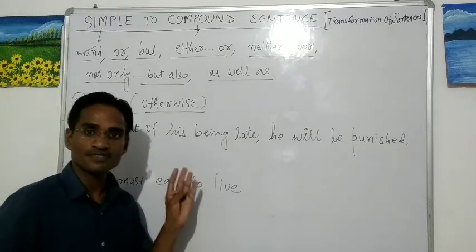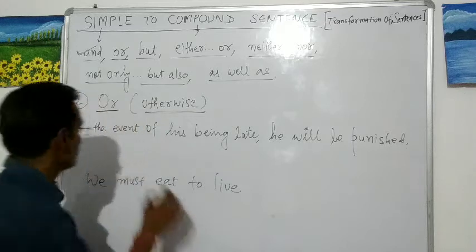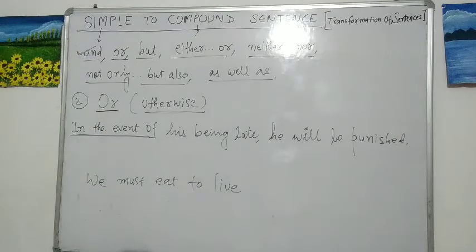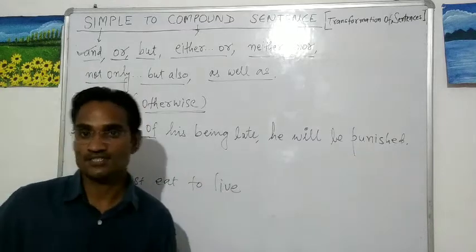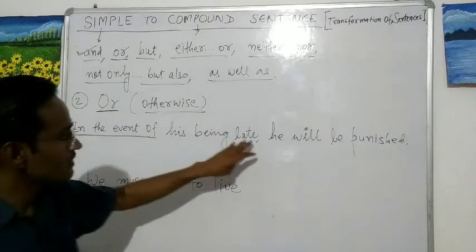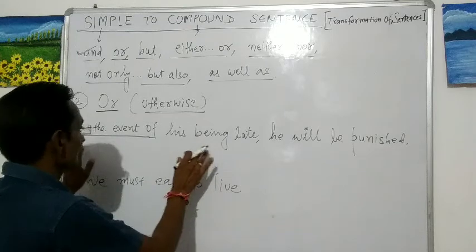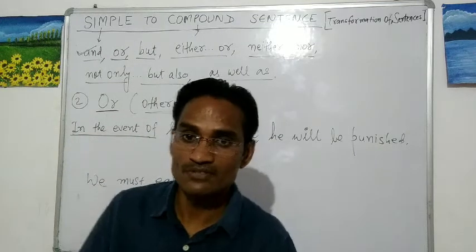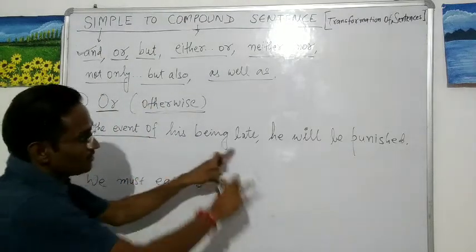Let's see some more sentences. 'In the event of his being late, he will be punished.' This means: if he gets late, he will be punished. You are to change this into a compound sentence using 'or.' Using 'or,' the result will be: something 'or he will be punished.' That means: 'He must not be late, or he will be punished.'